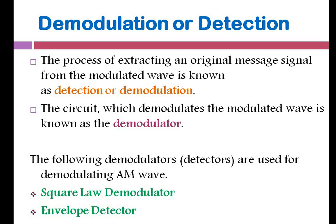Last class we saw the modulation techniques or the modulation process for creating amplitude modulation. We had two kinds of modulators for the generation of amplitude modulation. There are two methods: the first one is the square law modulator and switching modulator.